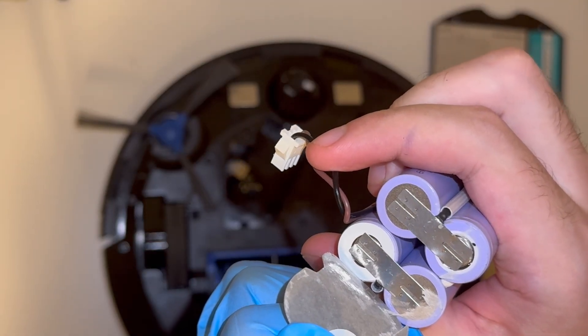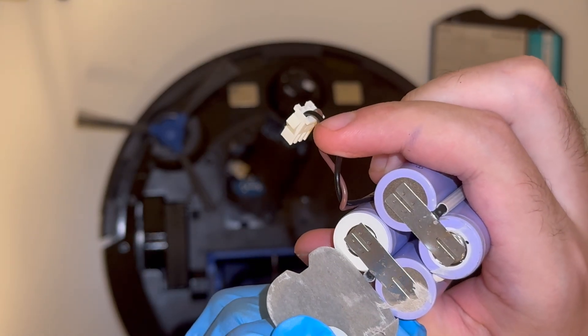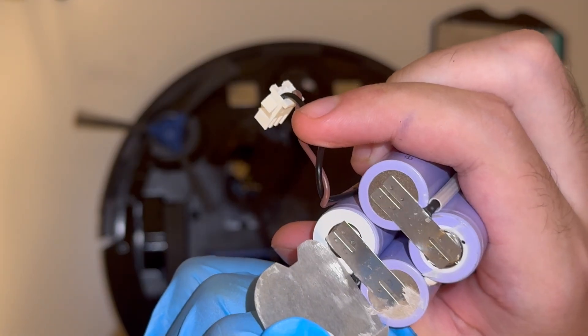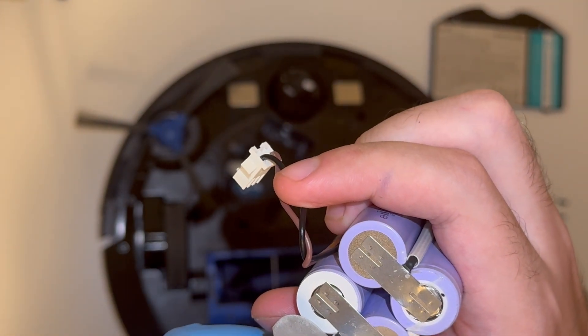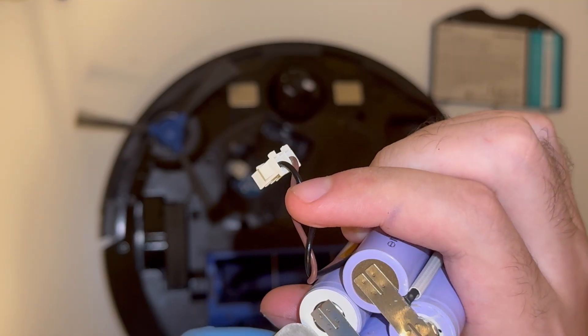So you can see underneath this fish paper there's these two nickel strips and they're both spot welded to the battery cells. You can also see that every other cell is in the opposite orientation because this battery is four cells in series.